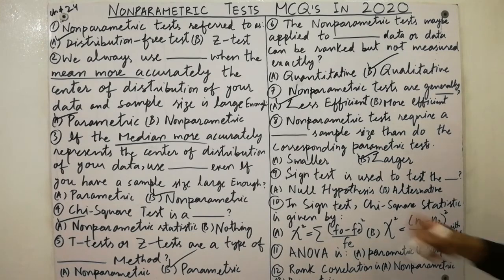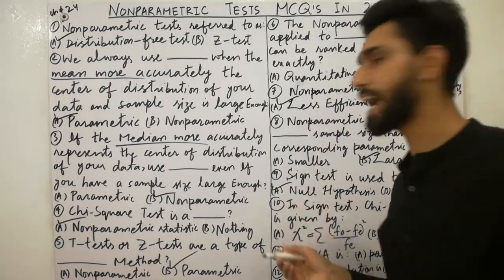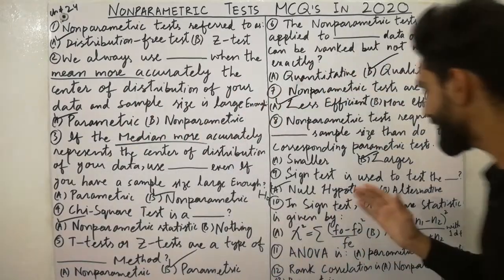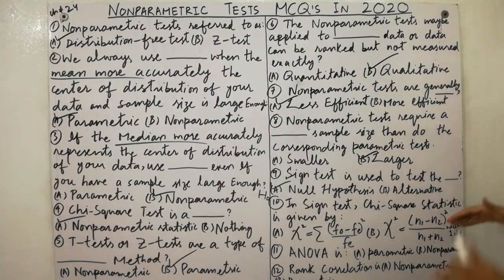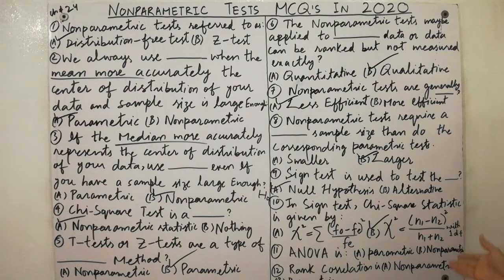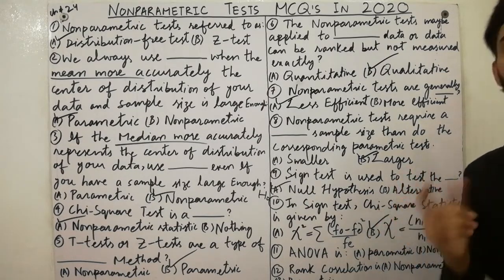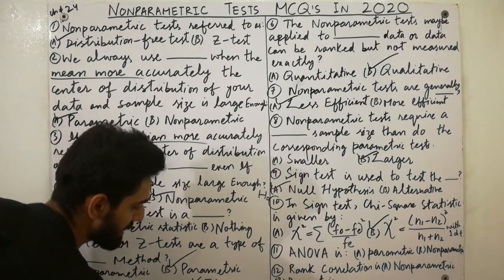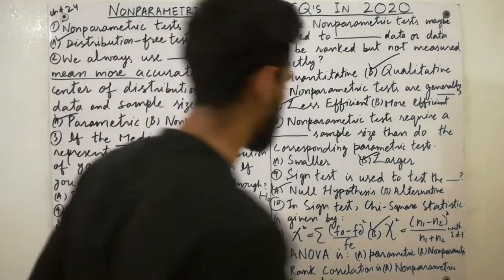The sign test is used to test the null hypothesis, denoted H-naught. In the sign test, the chi-square statistic is given by the formula: chi-square equals (n1 minus n2) squared divided by (n1 plus n2), with one degree of freedom. The degree of freedom is always one for this test.